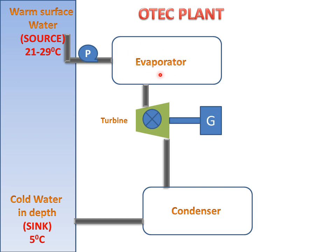At the evaporator, the surface water will be converted into vapors. Then these vapors will go to the turbine. The turbine will rotate and energy will be produced. Then the extra gases are transferred to the condenser.